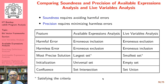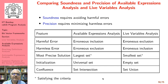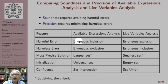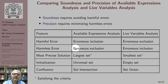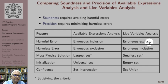Let us compare some features of available expressions analysis and live variables analysis. Soundness requires us to avoid harmful errors, and precision requires us to minimize harmless errors. In case of available expressions, erroneous inclusion of an expression in the set is a harmful error, whereas in case of live variables analysis, erroneous inclusion is a harmless error. In case of available expressions analysis, erroneous exclusion is a harmless error, whereas in case of live variables analysis, erroneous exclusion is a harmful error — we end up not marking a variable as live and end up deleting an assignment we should not have deleted.